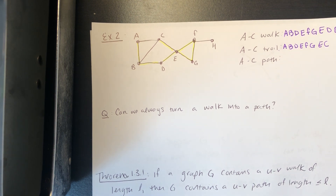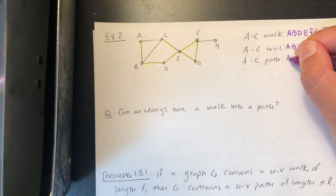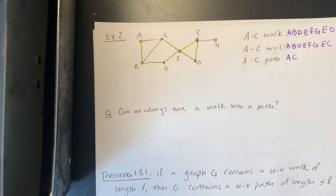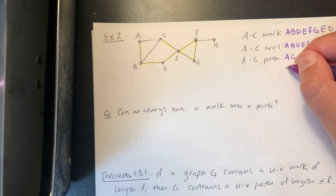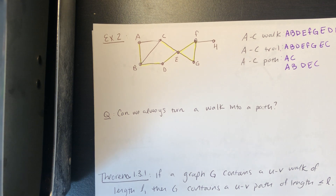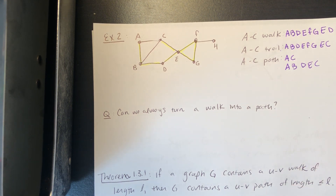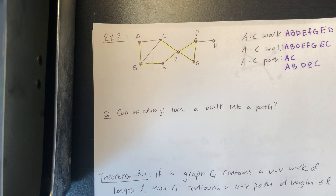For an a-to-c path, a simple example is just a, c — since a and c are adjacent. A slightly longer example would be a, b, d, e, c. There are many valid paths; the key requirement is no repeated vertices, which also ensures no repeated edges.